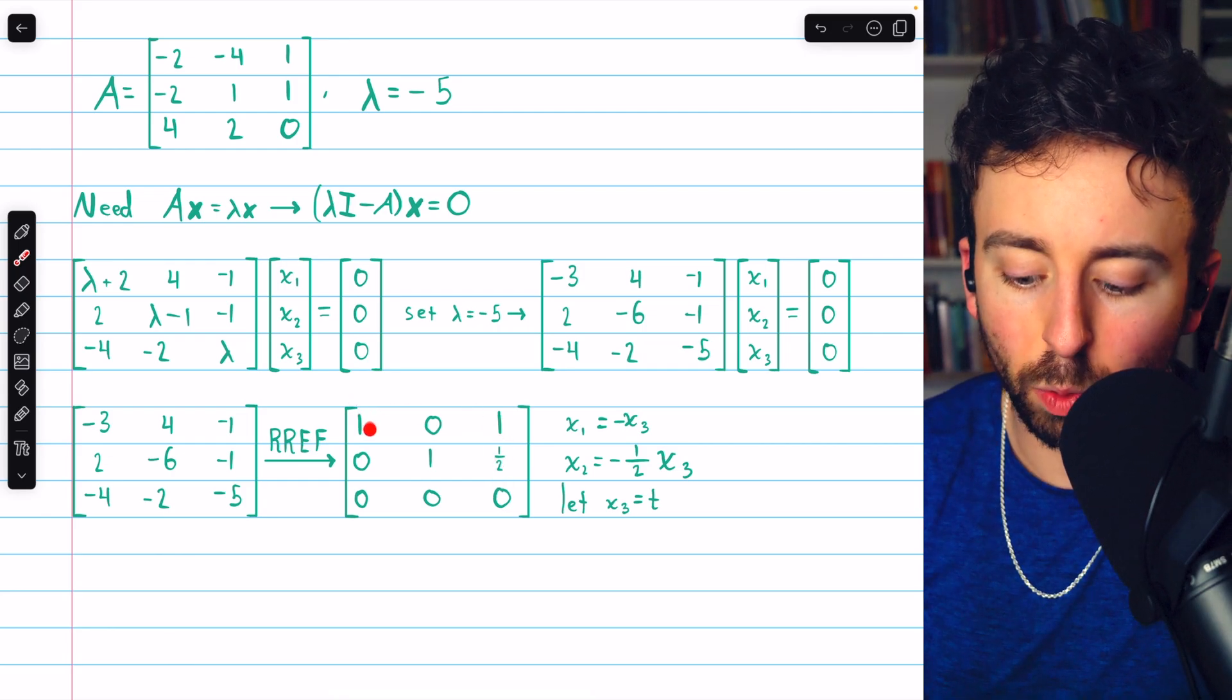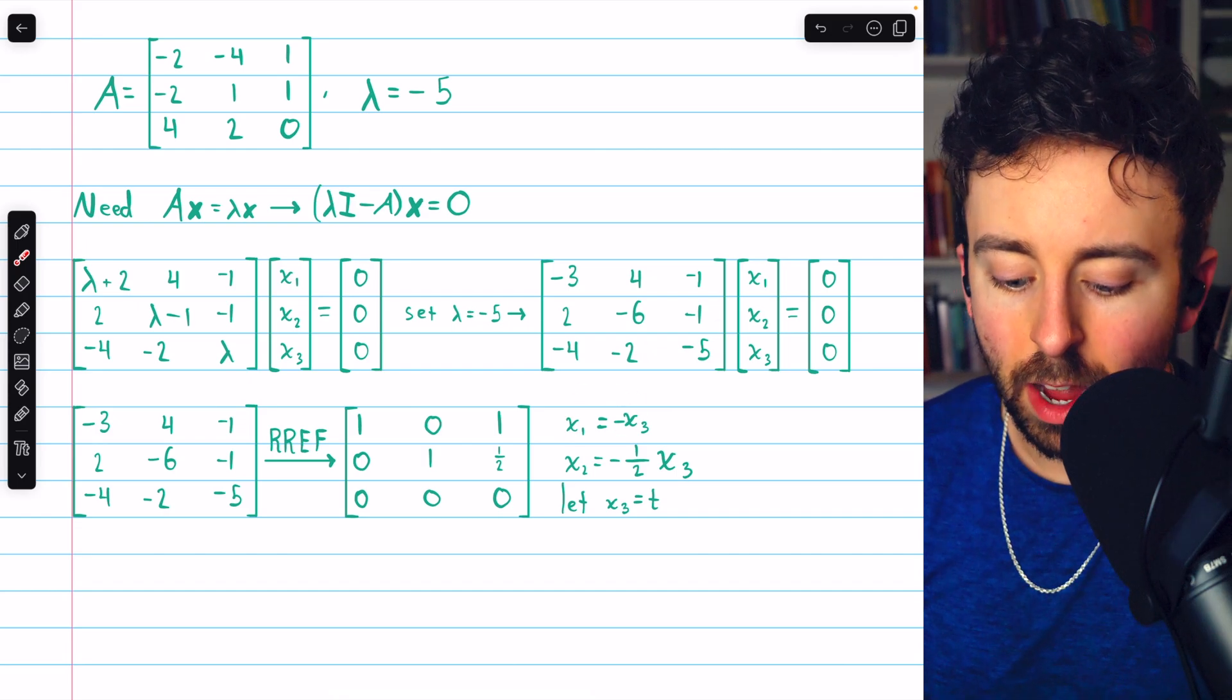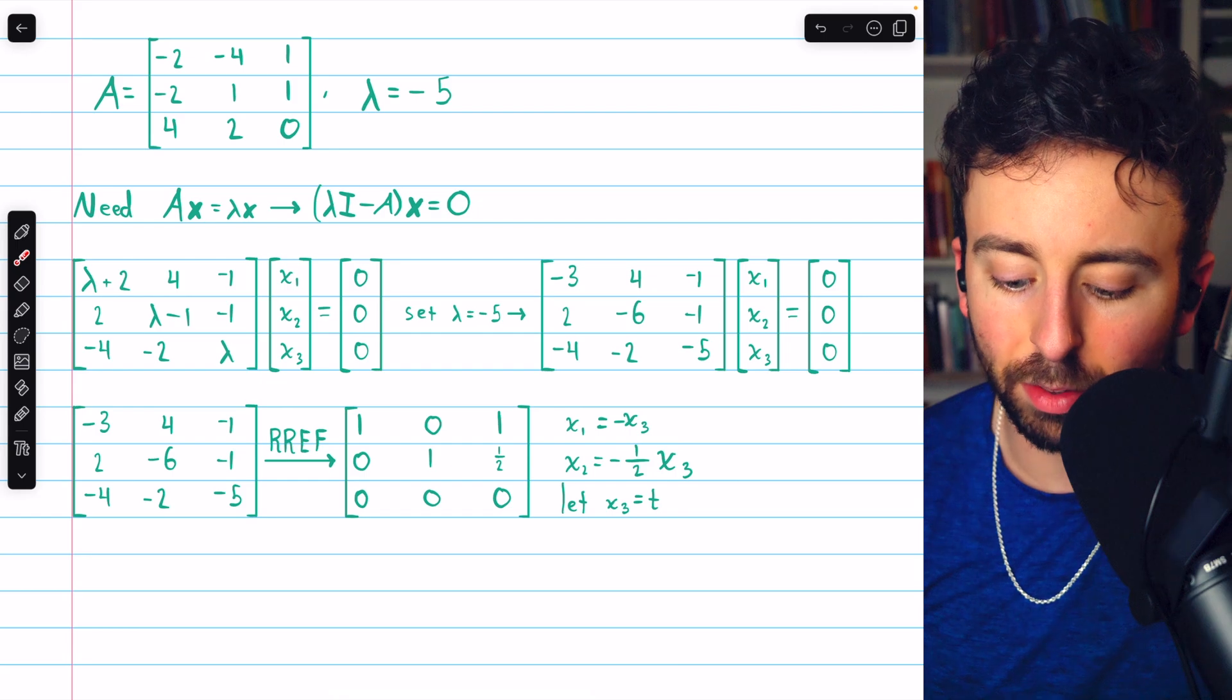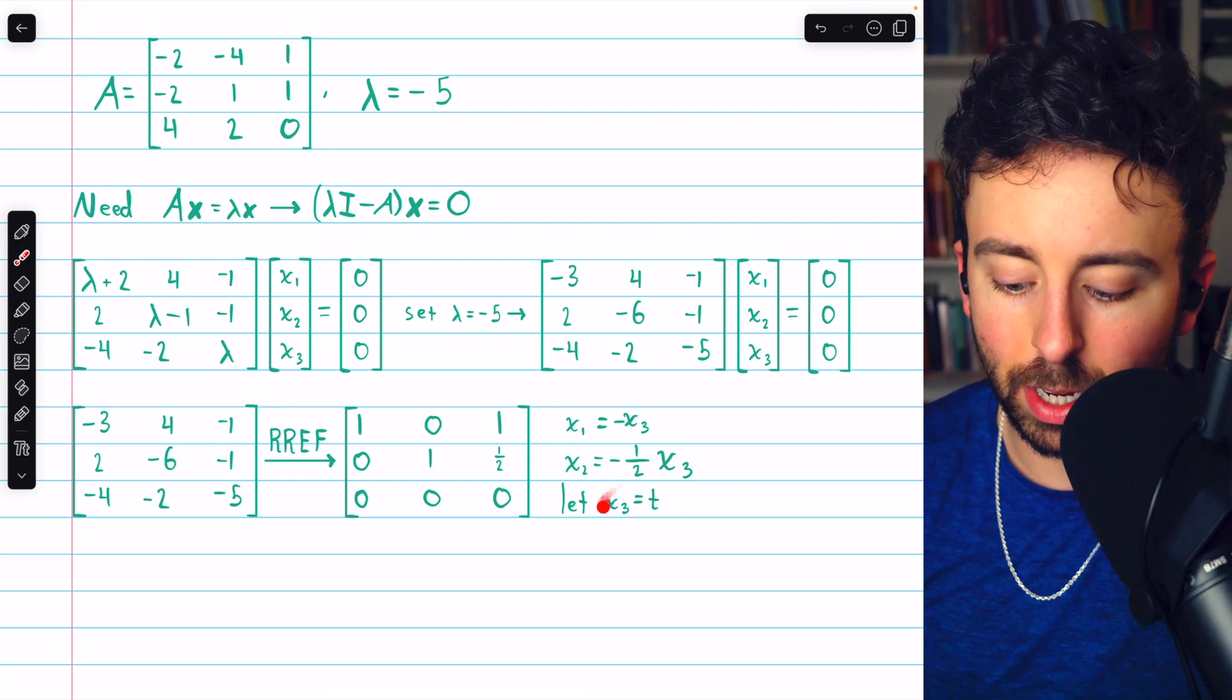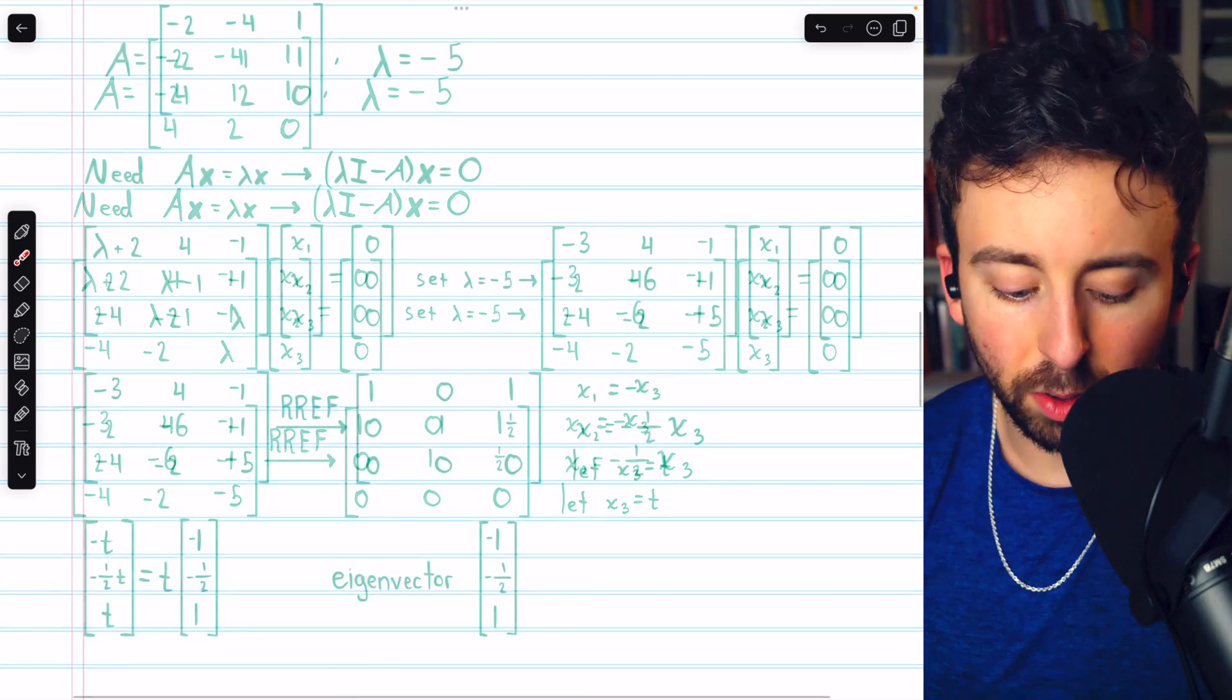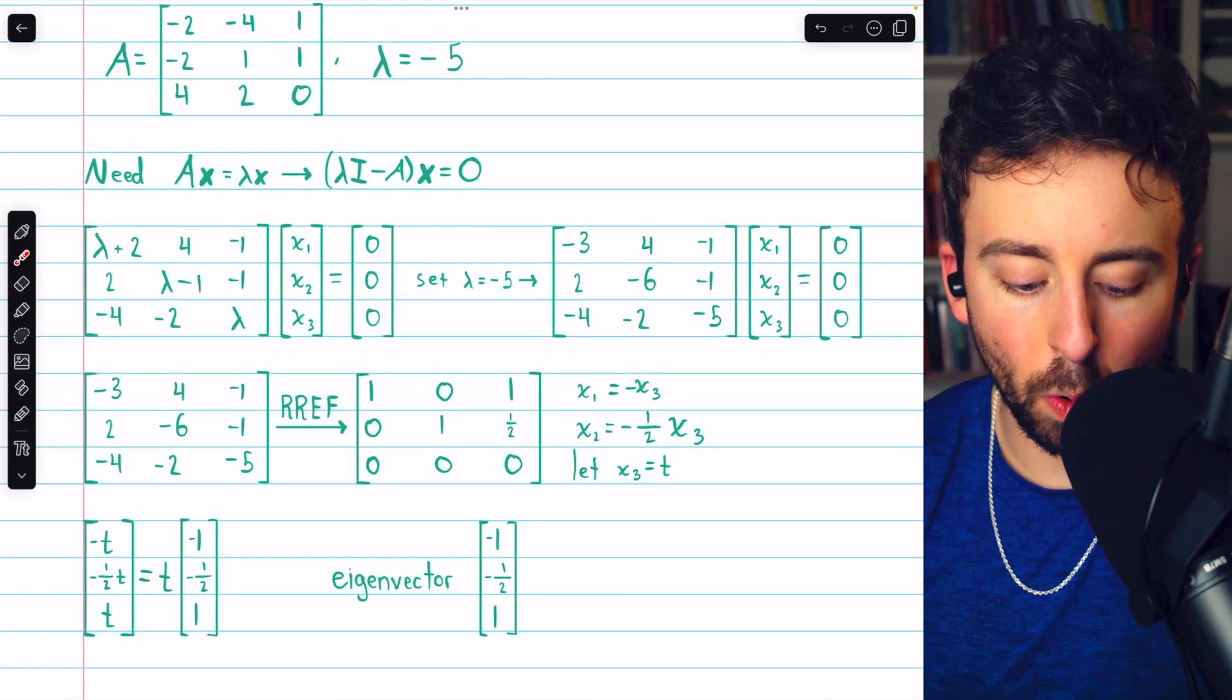From the first row, we have that x1 must equal negative x3. From the second row, we have that x2 must equal negative half x3. And again, x3 itself is going to be a free variable. So say x3 equals t.